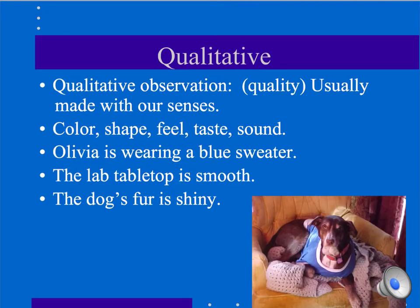Here are some examples of the two different types of observations. The first kind is a qualitative observation. These are usually made with our senses. If you break the word down, you can see the word quality in qualitative. They include color, shape, feel, taste, sound. Some examples are included here for you to reference.